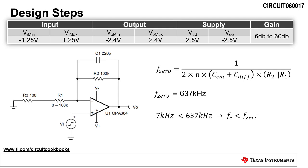The last step is to check for stability at the minimum gain, since this is the most likely gain to have stability issues. The minimum gain occurs with R1 set to 100 kilo ohms. To ensure stability, the circuit bandwidth, Fc, must be less than the zero frequency, F0,